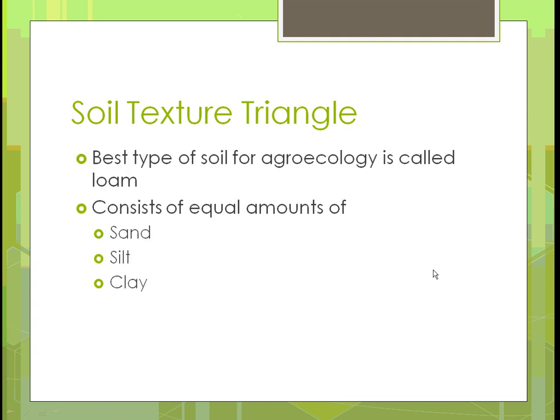The importance of this is that when you want to grow things, the best soil is something called loam. That consists of equal amounts of sand, silt, and clay — 33 and a third percent of each component. That's what's considered loam, and that's the richest soil. It will hold the best nutrients for the proper amount of time, and plants will grow the best.